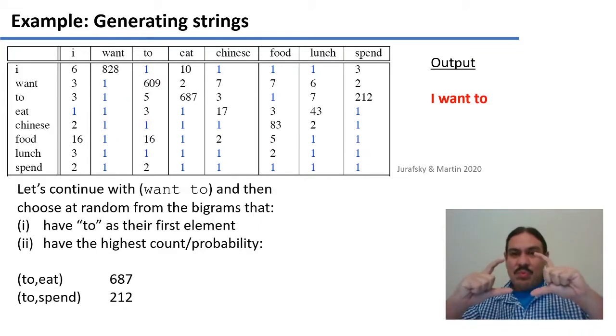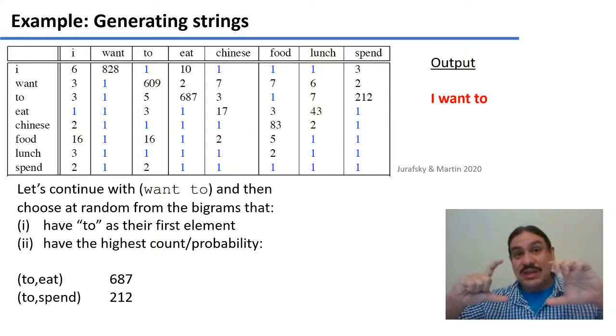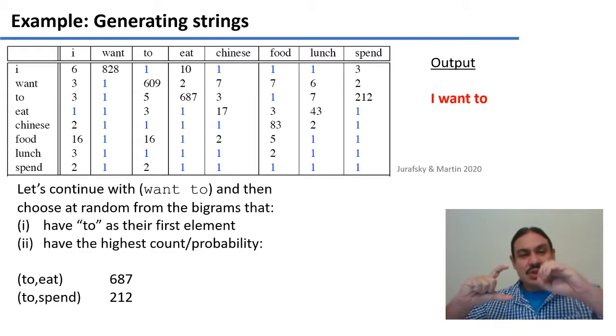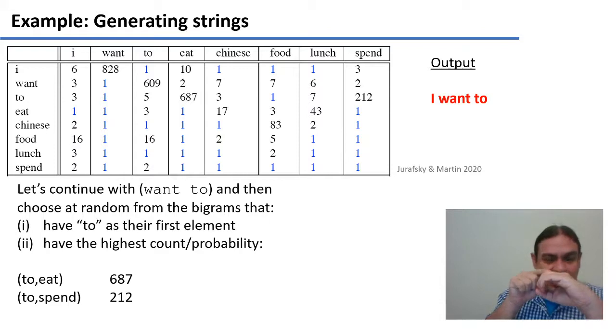We have the bigram want to. So let's take the second element, to, and make it the first element of the new bigram. We're standing on to. And then where do we go? Maybe we can go to to eat, which occurs 687 times. We can go to spend, which occurs 212 times. We could go to lunch, which occurs seven times. Since we're using the one with the highest count, let's have to eat. So I want, want to, to eat.